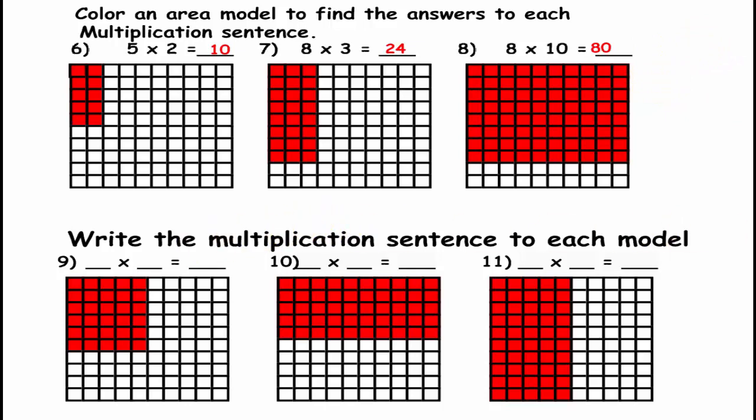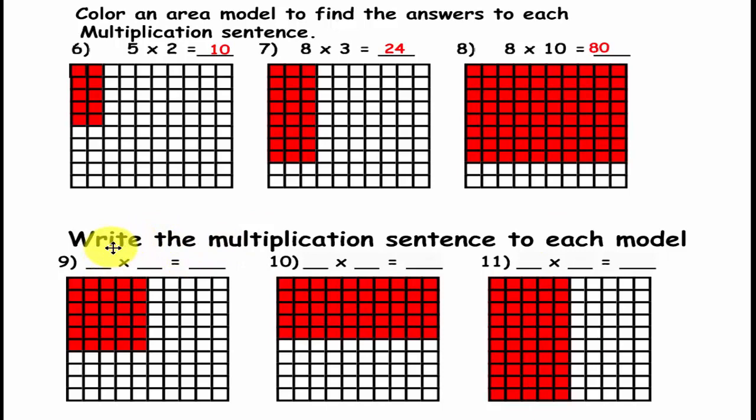Now let's look at the next one. The last way we are going to look at an array for multiplication is this one, 9, 10, and 11.